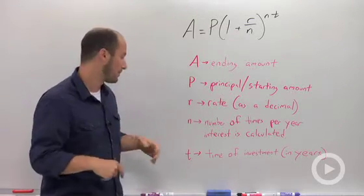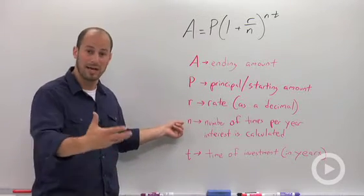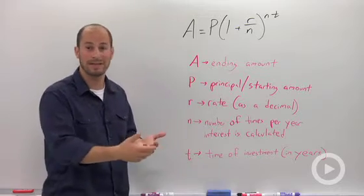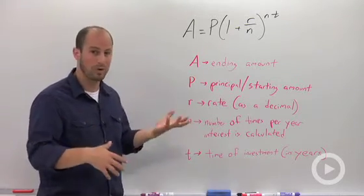And n is the number of times per year interest is calculated. So if it's daily, you put in 365; weekly, 52 weeks in the year, put in 52; monthly, 12; quarterly means four times a year, so four, and so on and so forth.